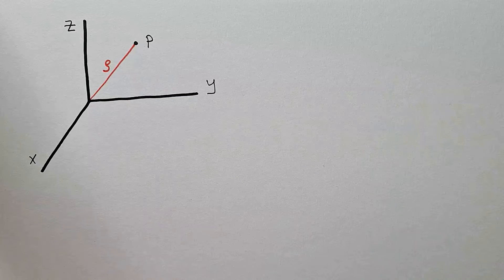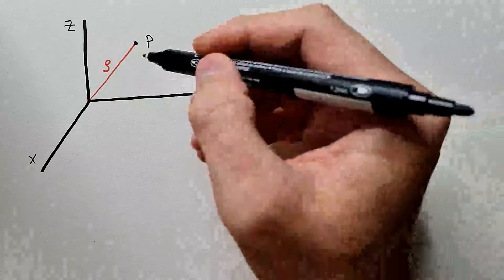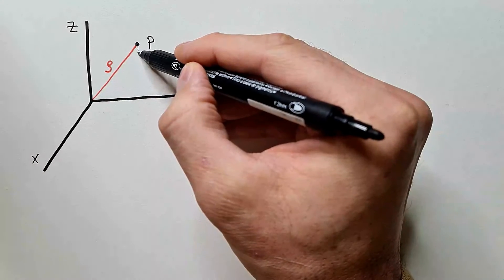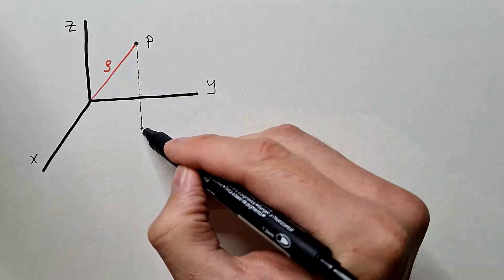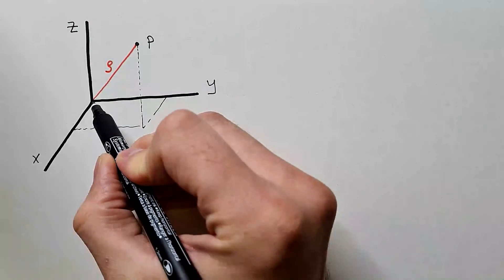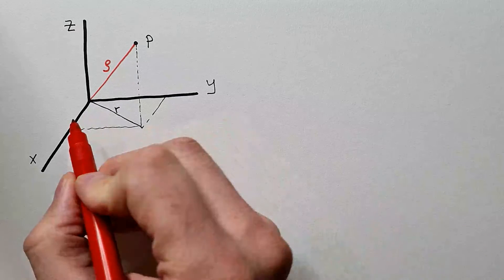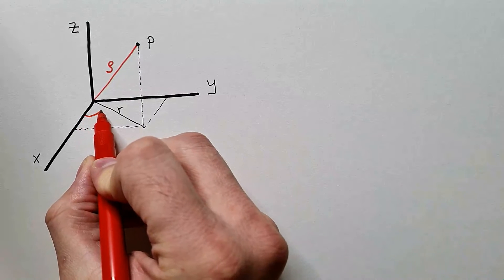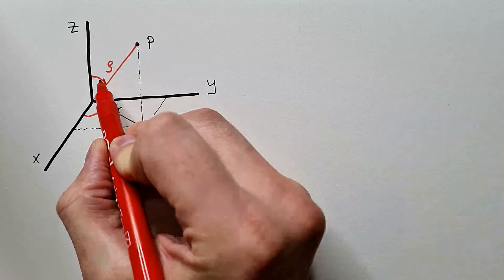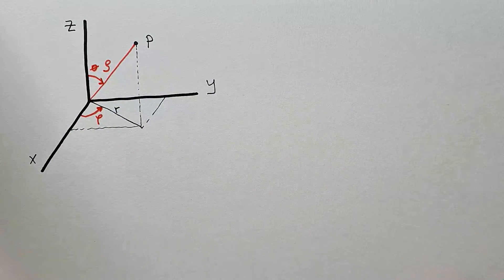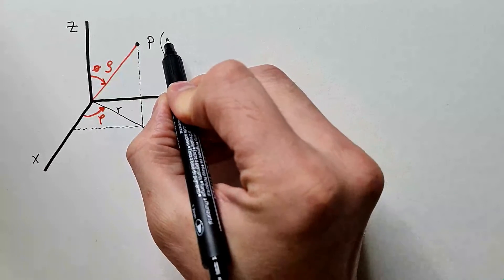and angles phi and theta. Angle phi is the same angle that we had in the case of cylindrical coordinate system, which means I need to project this point P to the x, y plane. This was radius vector in cylindrical coordinates. This is angle phi, and this is angle theta. Therefore, we say that this point P has coordinates rho, phi and theta.